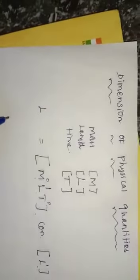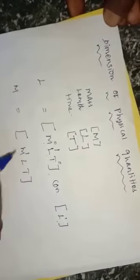Similarly, the dimension formula of mass — first write the dimensional unit M, L, T. Since only mass is asked, put power 1 on M, and power 0 on L and T. So the dimension formula of mass is M¹L⁰T⁰, or simply written as M.